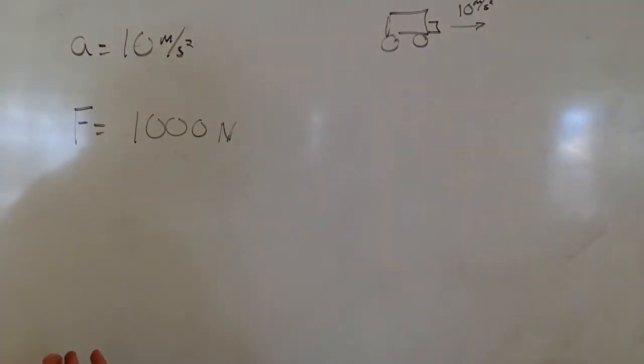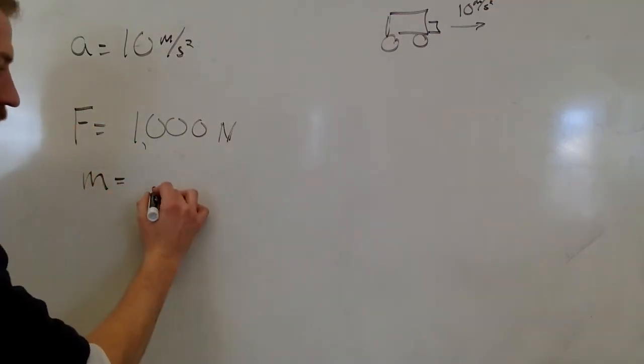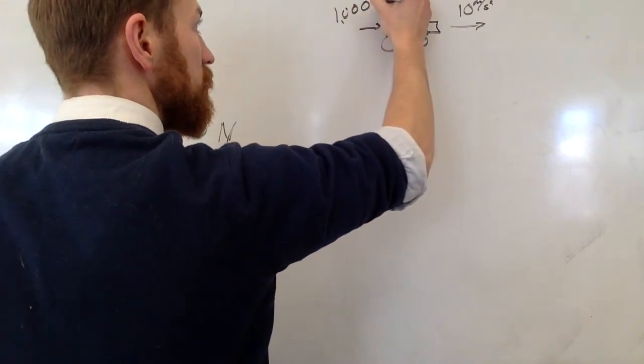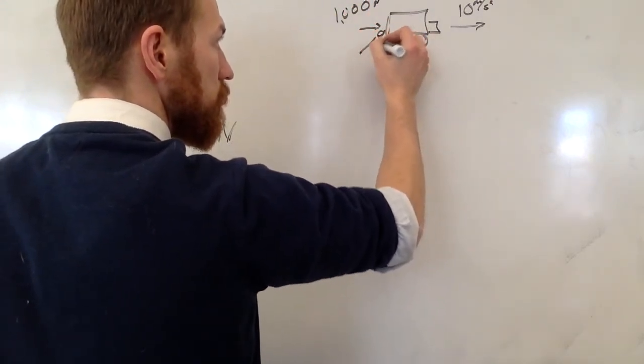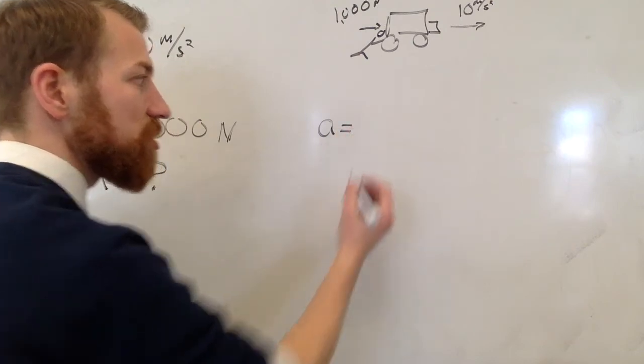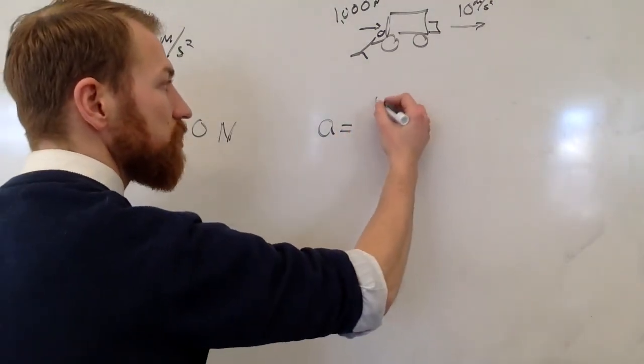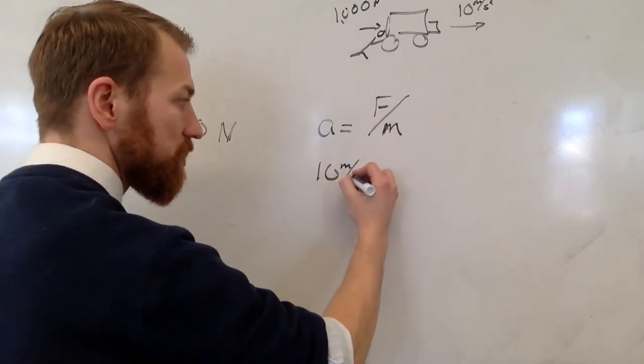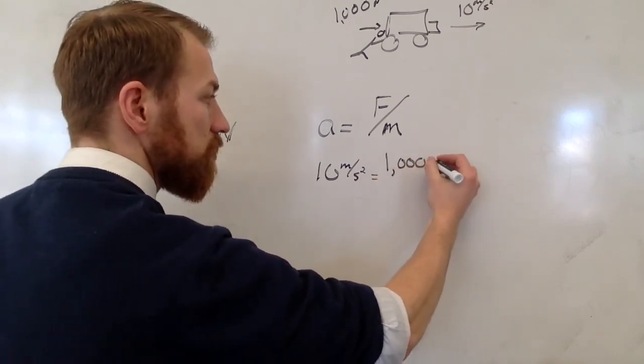Newtons is just the measurement of force that we use. It's imagine it as the amount of pushing or pulling something has, the amount of force itself. I can now use these two pieces of information to solve for the mass. The mass, I don't know, so I'm going to put a question mark. And we know that this is being pushed by 1,000 newtons. What is the mass of the truck? Well, I can plug it into the equation that we just found out. Acceleration equals force over mass.